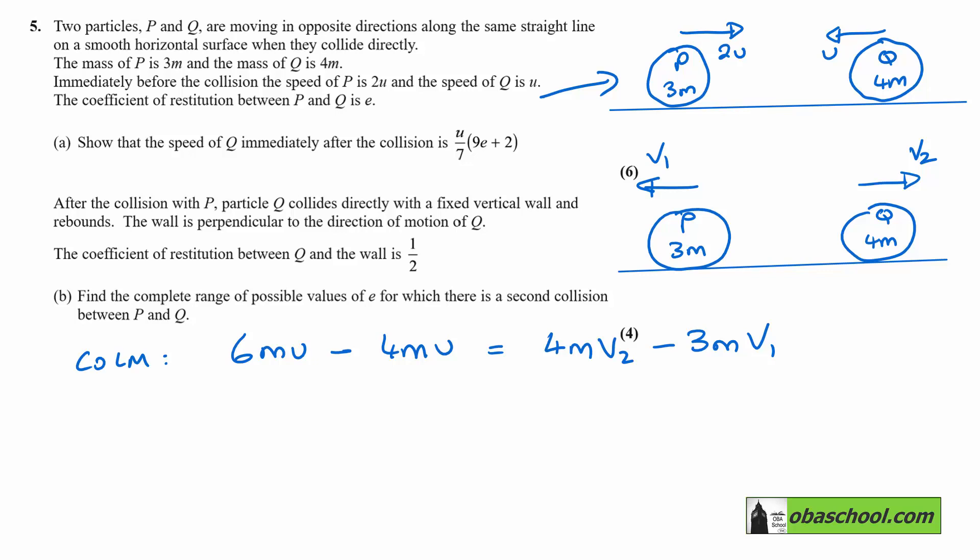So we can simplify that to 2mu is 4mV2, take away 3mV1, and we can cancel the m's out of there, giving ourselves 2u is 4v2, take away 3v1. And let's call that equation 1.